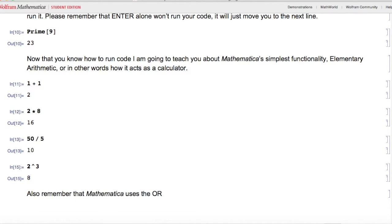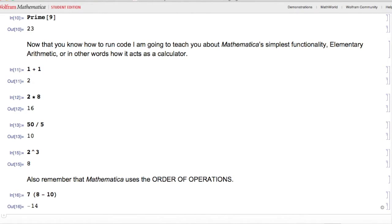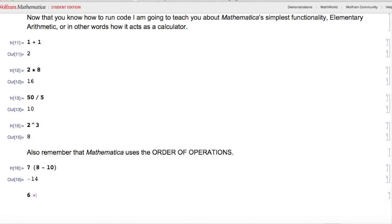What you also have to remember is that Mathematica uses the order of operations. That means that if you use parentheses, what happens in the parentheses happens first. So seven times eight minus ten is negative fourteen. And then I'll do six plus four times three, which is eighteen.